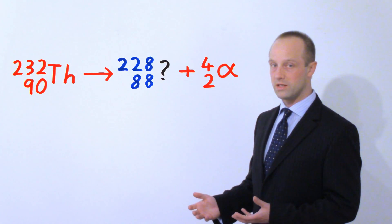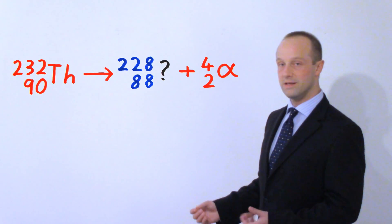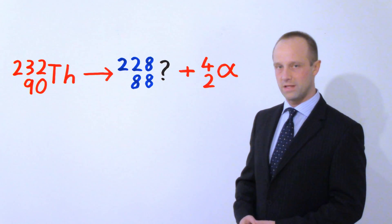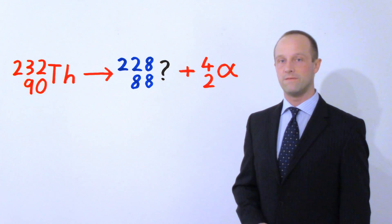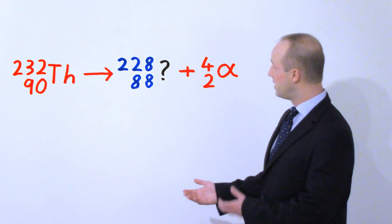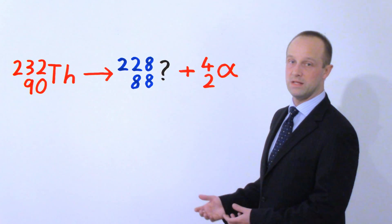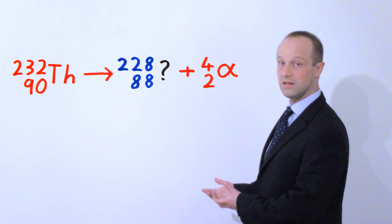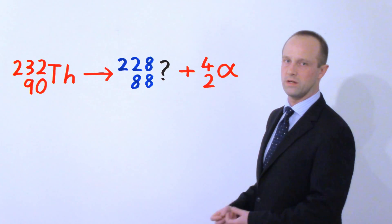So, when you see this type of equation, what you're going to see is somewhere in here, there's going to be a gap and you need to fill it in. You need to know that the alpha particle has a mass of four and a proton number of two and you need to be able to say, well, that means I'm going to take four off the big number, the mass number, and it means I'm going to take two off the small number, the proton number.